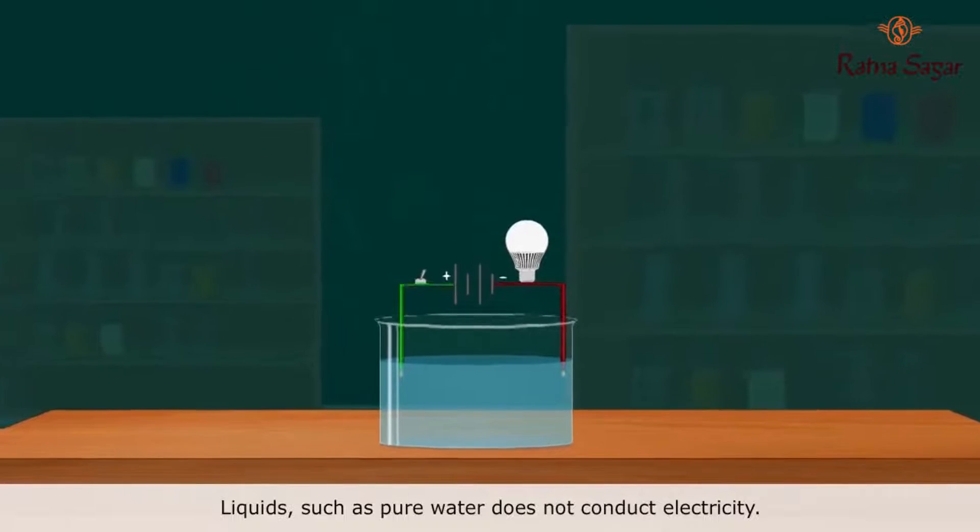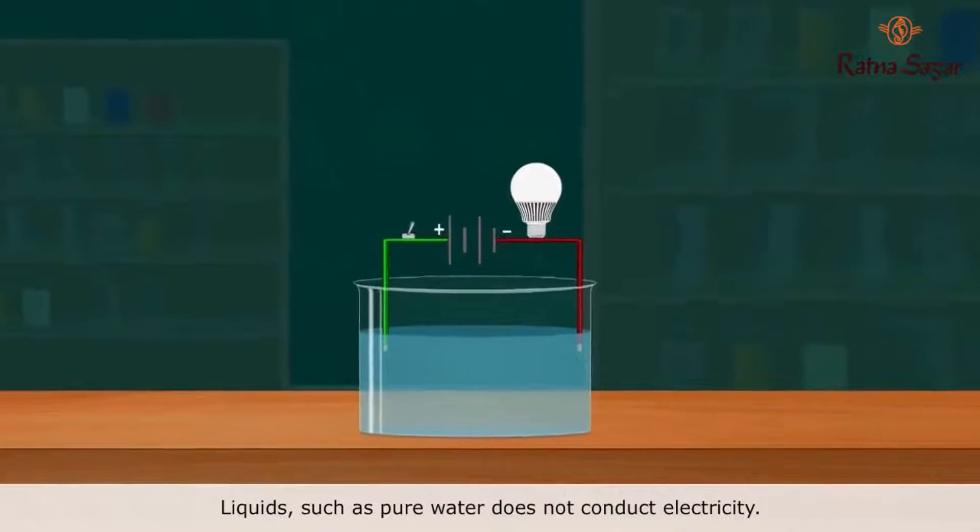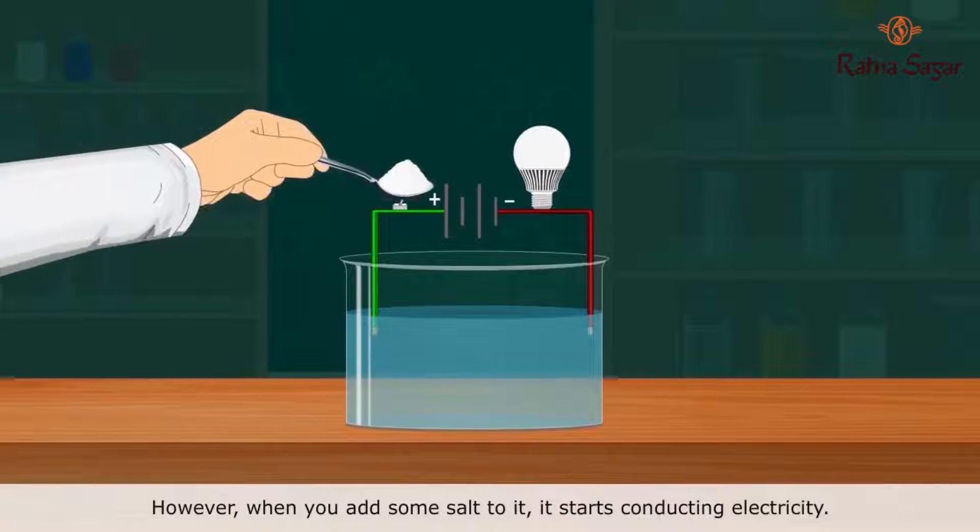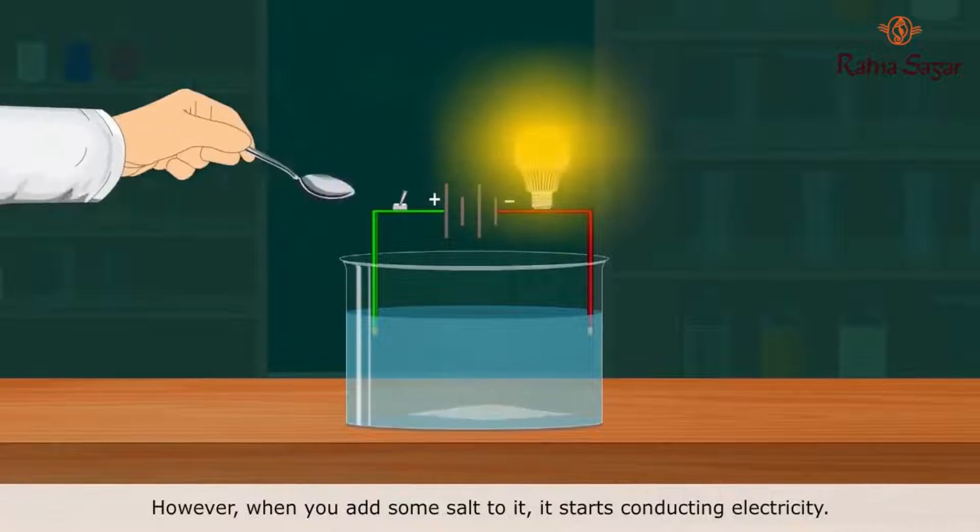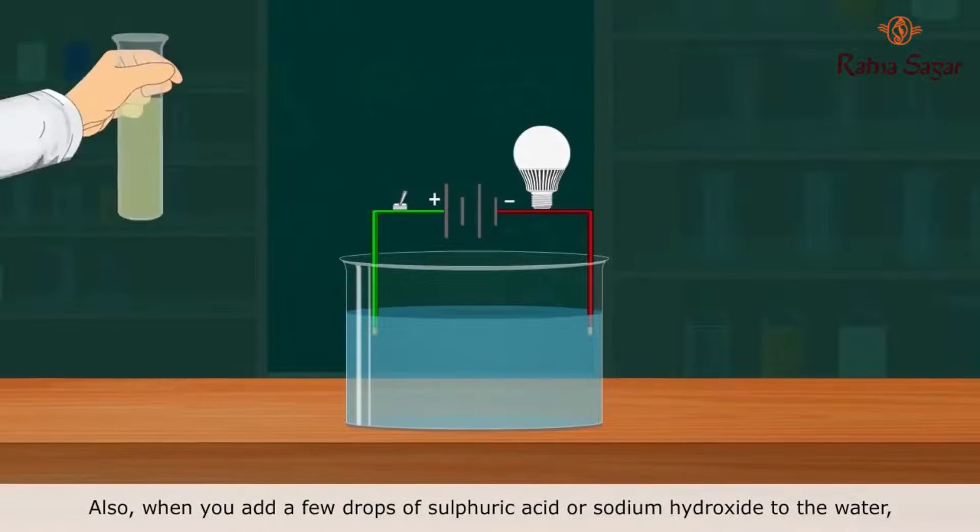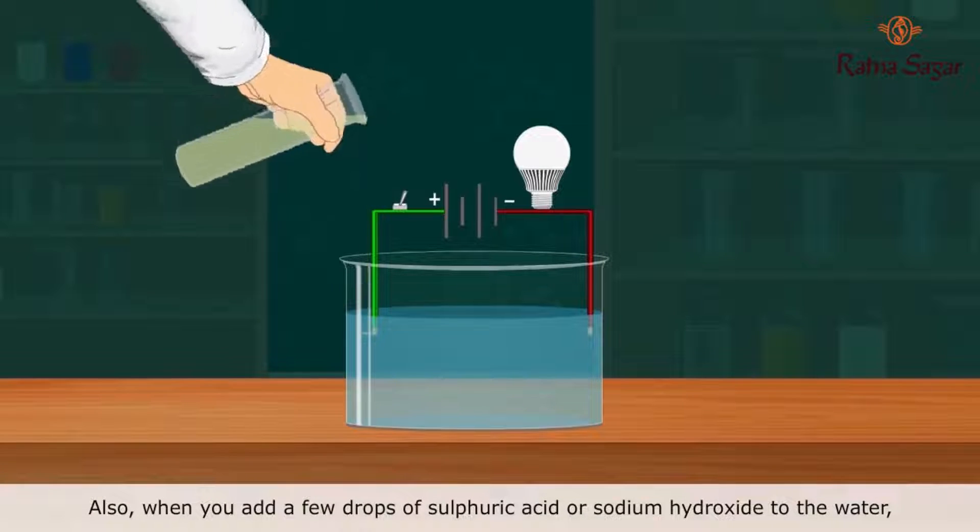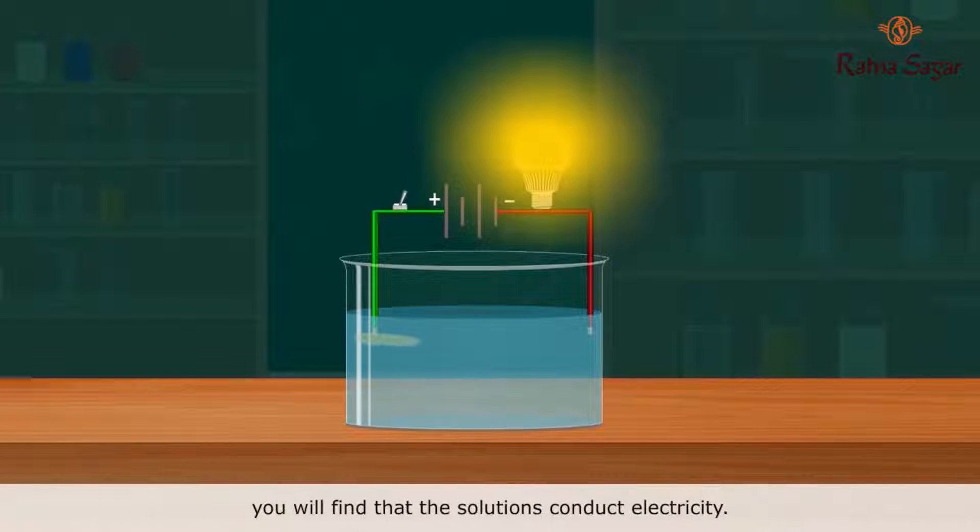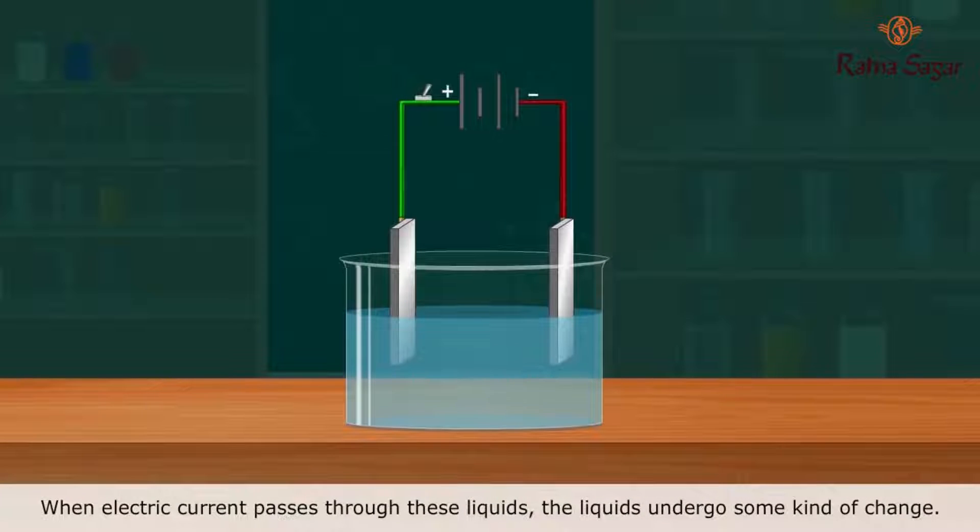Liquids such as pure water do not conduct electricity. However, when you add some salt to it, it starts conducting electricity. Also, when you add a few drops of sulfuric acid or sodium hydroxide to the water, you will find that the solutions conduct electricity. When electric current passes through these liquids,